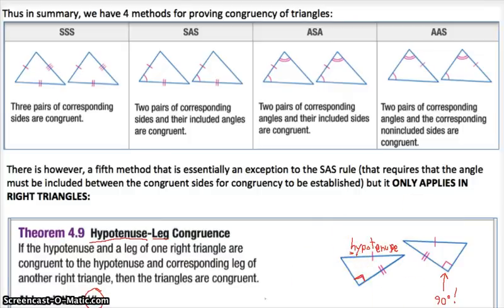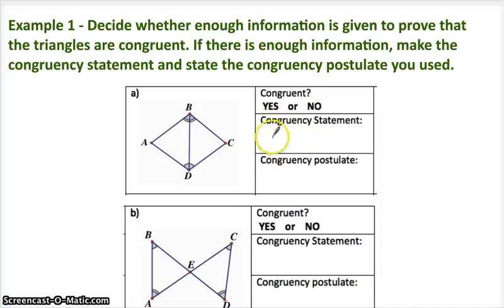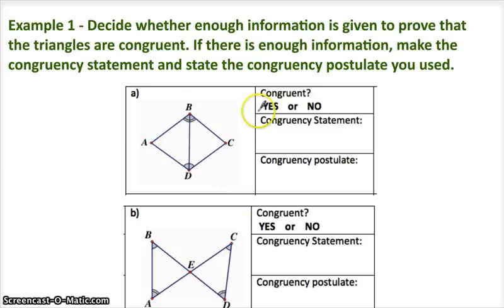That does not mean the other postulates don't also work for right triangles — you could prove two right triangles congruent by SSS or ASA. But HL requires us to be talking about right triangles first. Alright, we're ready to start doing some examples. When you see triangles stuck together, realize that you can use a shared piece in both triangles — that counts.